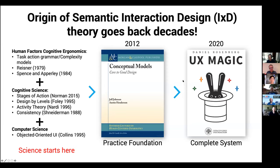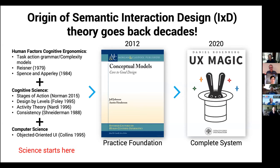What I did in UX Magic was to turn this into a complete system — both a methodology for design and a pedagogy for teaching. The value proposition is simple: faster and better. Faster means fewer iterations, fewer meetings, less damage due to feature creep, and scientific-based trade-offs, not massive trial and error experiments. And by optimal designs, the underlying thing is design with the lowest cognitive load, which generally has the side effects of having the minimum number of screens and the shortest flows.